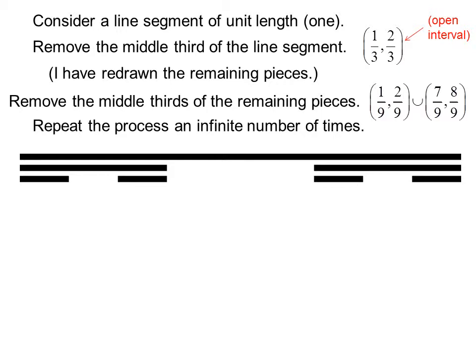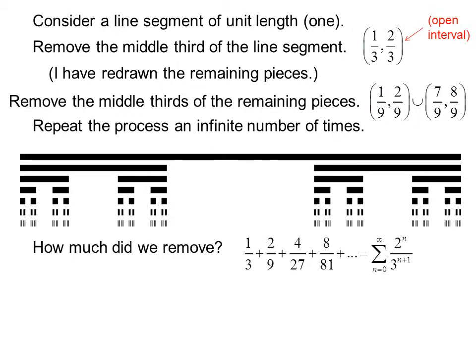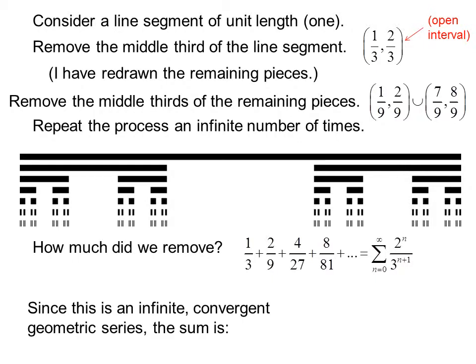Now repeat the process an infinite number of times. How much did we remove? The first time we removed 1 third, then 2 ninths, then 4 twenty-sevenths, then 8 eighty-firsts, and so forth, which we could summarize as the summation from n equals 0 to infinity of 2 to the n over 3 to the n plus 1. Since this is an infinite convergent geometric series, the sum is 1 third over 1 minus 2 thirds, or 1.